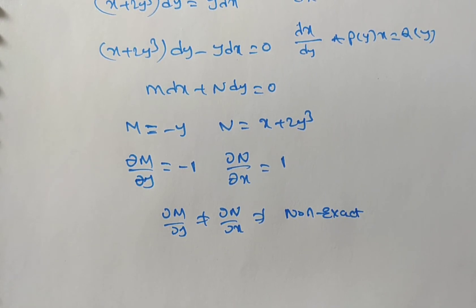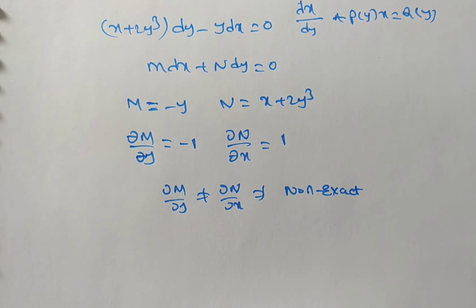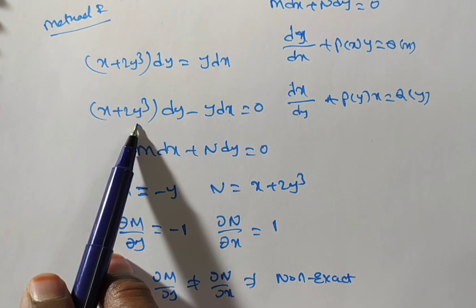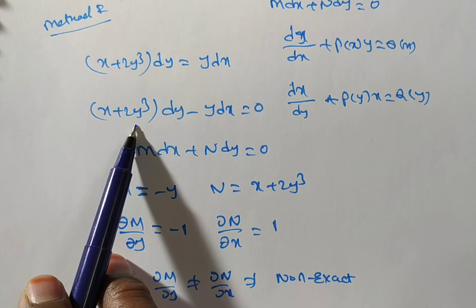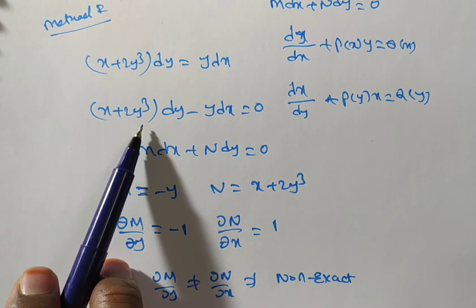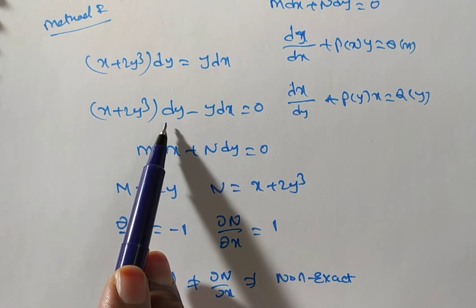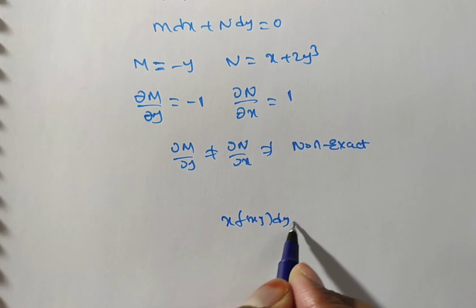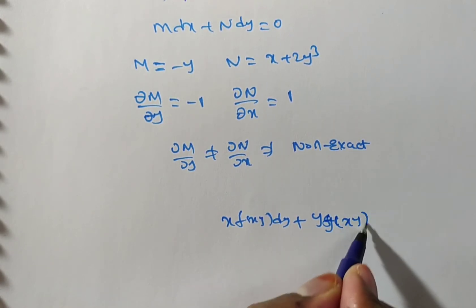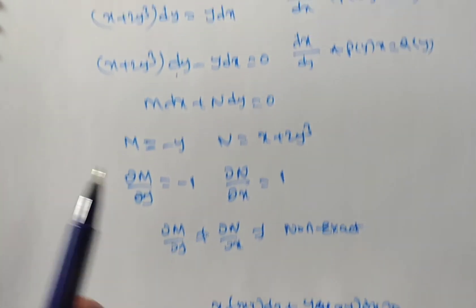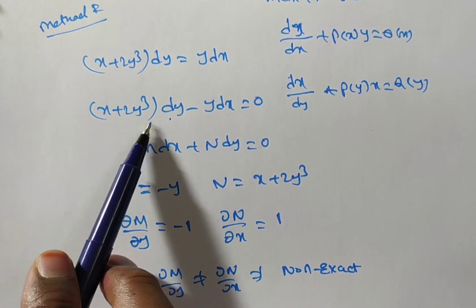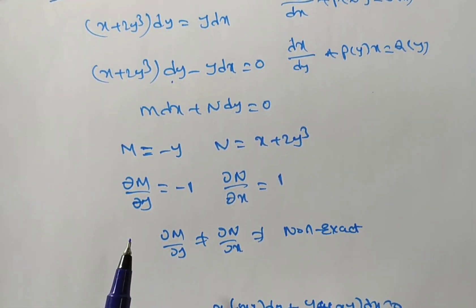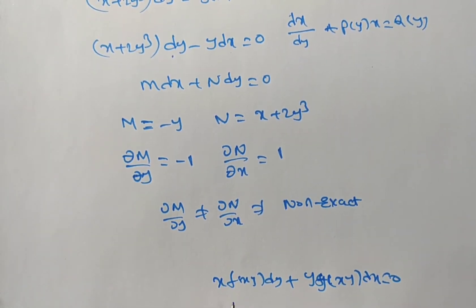For a non-exact equation, we verify if it is homogeneous. Here x has power 1 and y has power 3, so this is non-homogeneous. For a non-exact, non-homogeneous equation, rule 1 (homogeneous) is not possible. For rule 2, the form x·f(xy) dy + y·g(xy) dx = 0: although x dy is present, we have 2y³ dy which cannot be separated cleanly, so method 2 is not possible either.